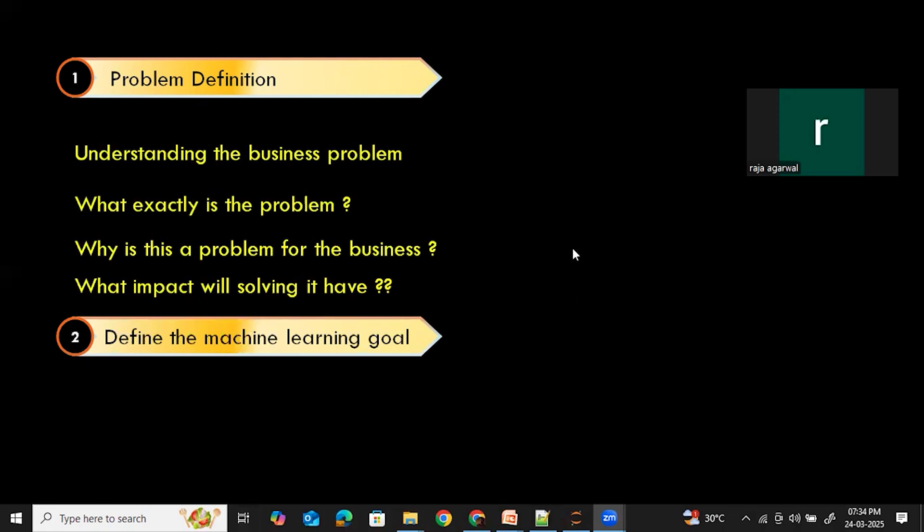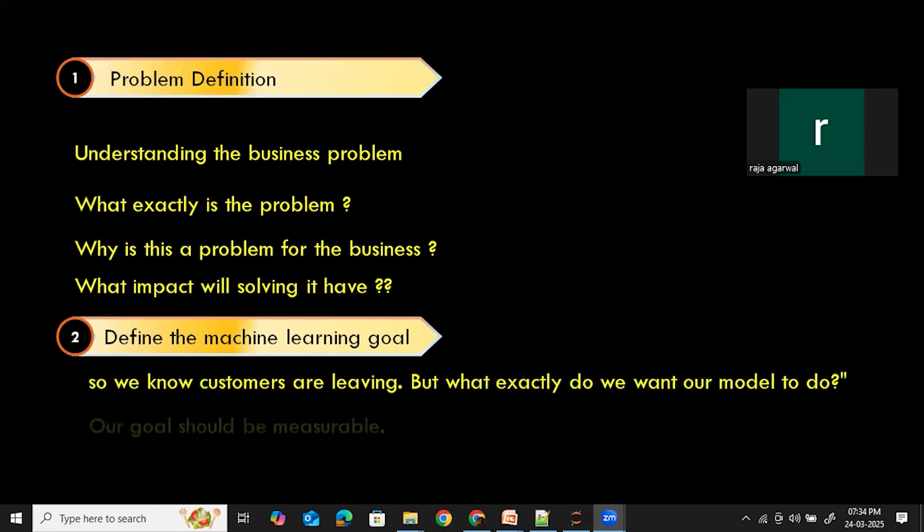The next step is to define the machine learning goal. We understood the business problem. In this example, we understood customers are leaving. What exactly is the problem? Why is this a problem for the business? Impact also we discussed. The next step, what are we going to do to solve this problem? Define the machine learning goal. So we know our customers are leaving. What exactly do we want our model to do? Our model has to predict if a customer will leave or stay. Yes, our model has to predict whether the customer is going to leave us or not.